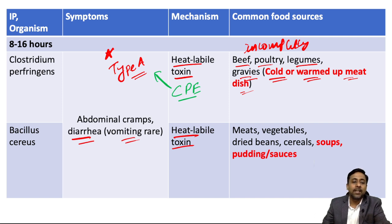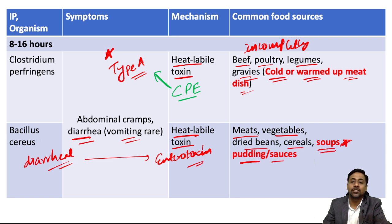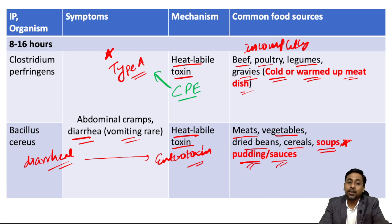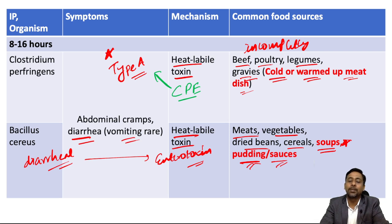Bacillus cereus diarrheal type is also caused by an enterotoxin. The foods responsible include meat, vegetables, dried beans, cereals, soups, pudding, and sauces. For the emetic type we saw fried rice, pasta, pastry, and noodles; for the diarrheal type, the characteristic foods are soups, pudding, and sauces, apart from common foods like meat and vegetables which appear across many agents.